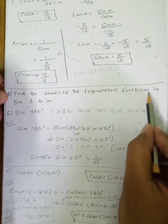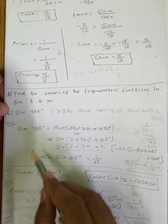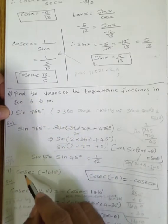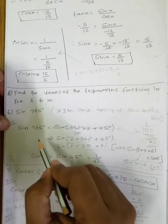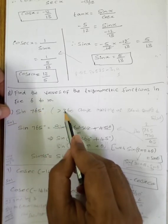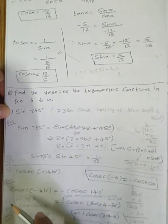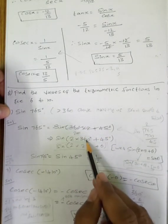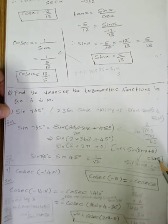Now find the value of trigonometry functions for x is 6 to 10. Sixth question: sin of 765 degrees. In 765 degrees, I can find the value directly. What I can do is: multiples of 360 are removed and the remaining degrees are used. So sin(2nπ + θ) equals sin θ.